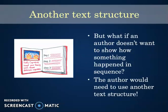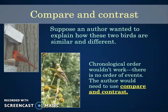Our next text structure is a little bit of a mystery — try to figure out what it is. The author doesn't want to show something that happened in sequence. Instead, they want to take two things, maybe put them in a Venn diagram, and talk about how they're the same and how they're different. We call that compare and contrast. Suppose an author wanted to explain how two birds are similar and different — chronological order wouldn't work because there's no order of events, so the author would use compare and contrast.